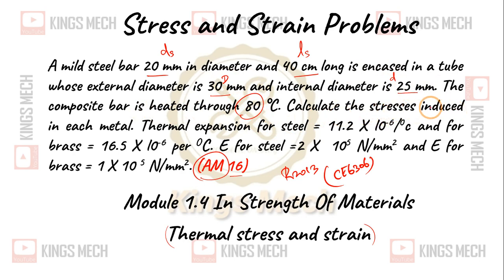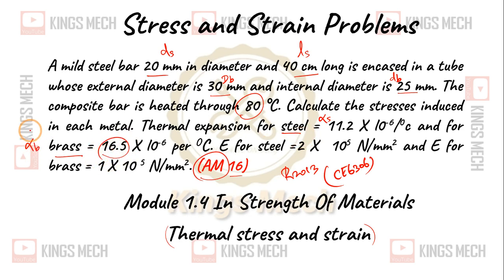Calculate the stresses induced in each metal. The thermal expansion coefficient for steel, alpha S, and for brass, alpha B. The value is 16.5, and you have to keep the negative sign.